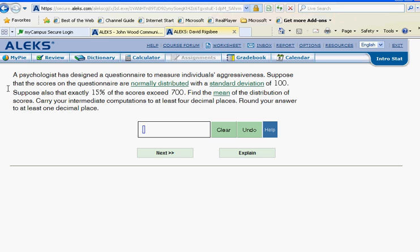A psychologist has designed a questionnaire to measure individual's aggressiveness. Now suppose that the scores on the questionnaire are normally distributed with a standard deviation of 100. Now also suppose that exactly 15% of the scores exceed 700. Find the mean of the distribution of scores and then round to one decimal place.